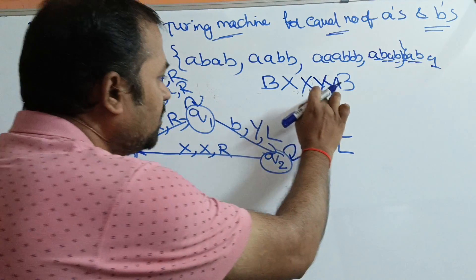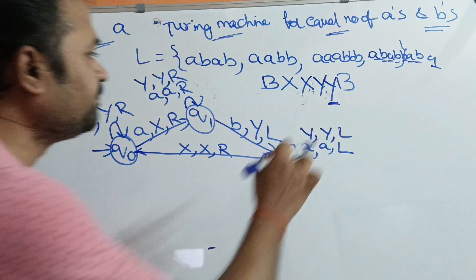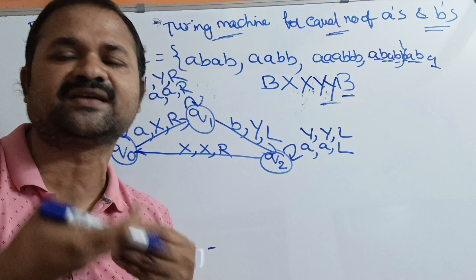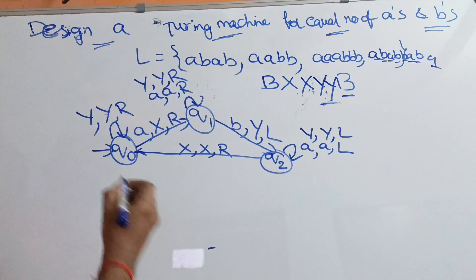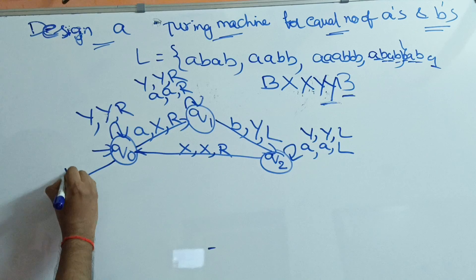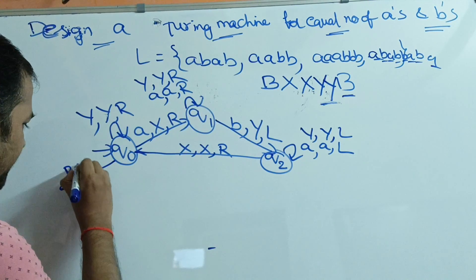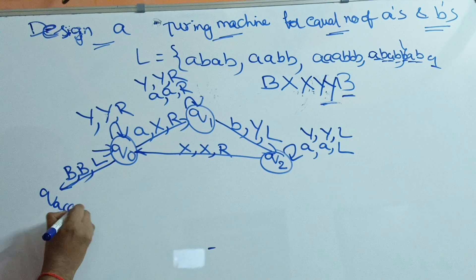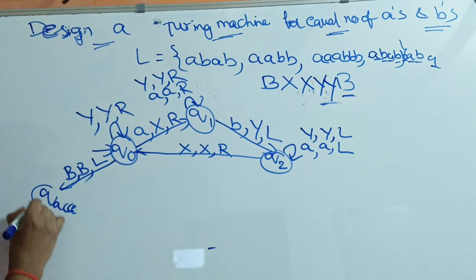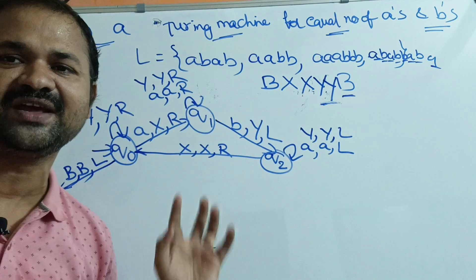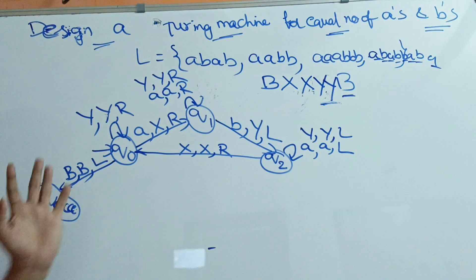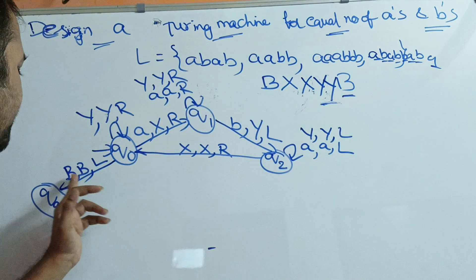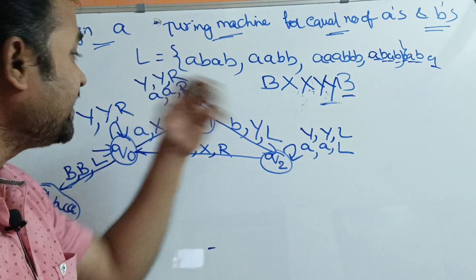Next, we got the blank symbol. So, if we read the blank symbol, then it specifies that our string is correct — it contains equal number of A's and B's. If we read any blank symbol on Q0, then replace it by blank symbol only and we can move the head towards the left or right. This is nothing but the acceptance state, Q accept. In a Turing machine, we don't have any final state, but we can enclose this state in double circles if we want. So, if we read blank symbol on Q0, we reach the acceptance state.